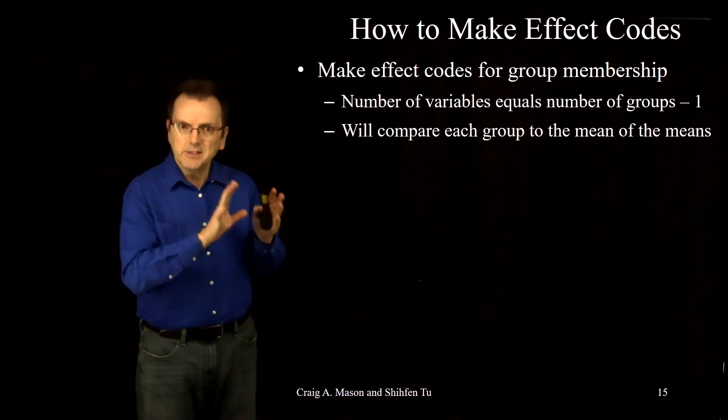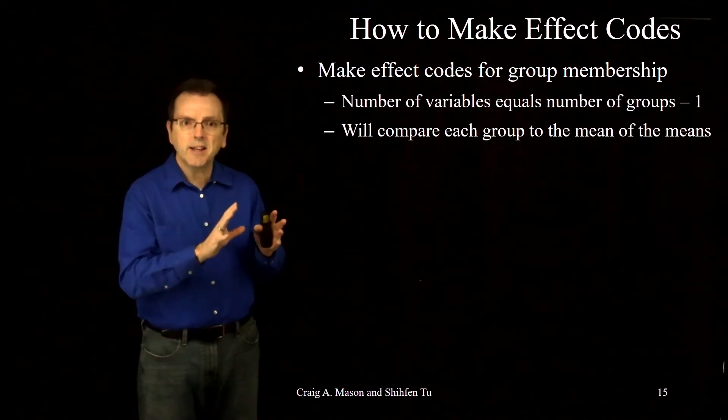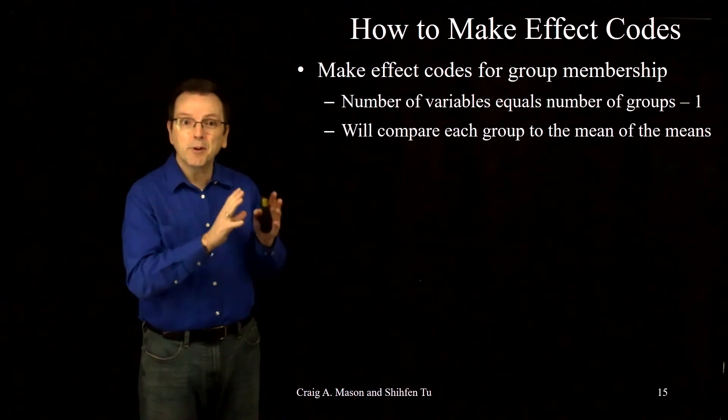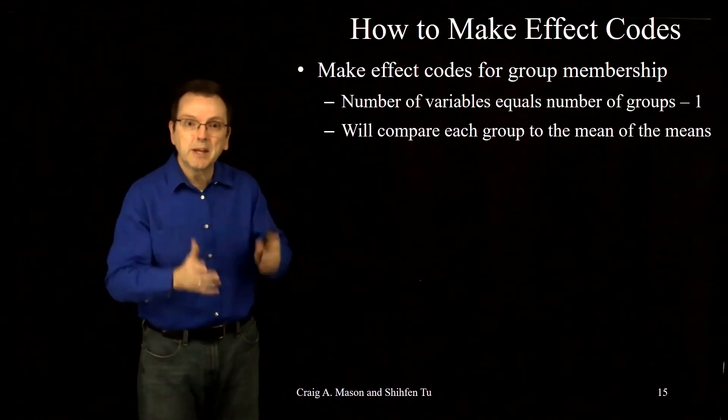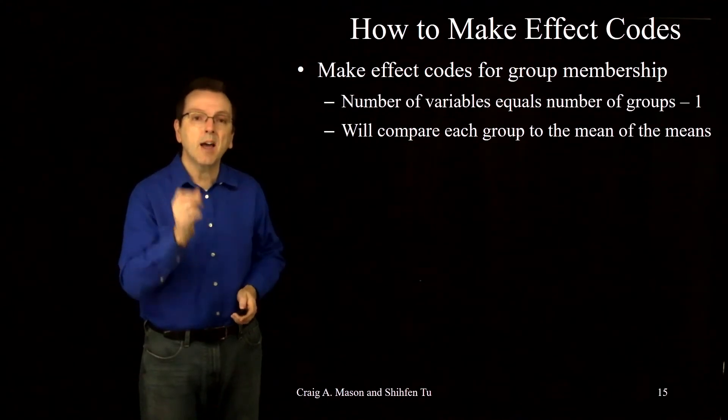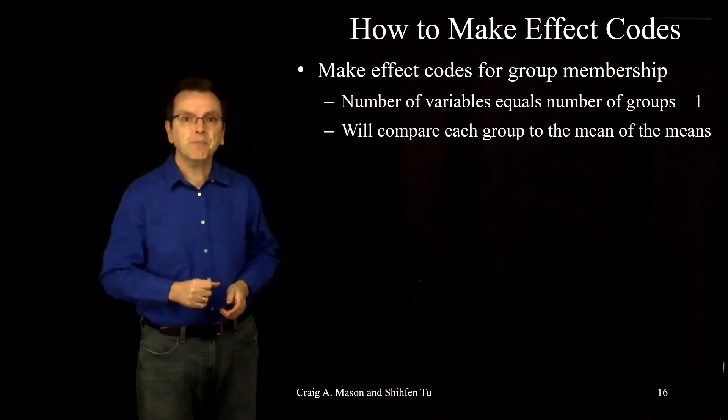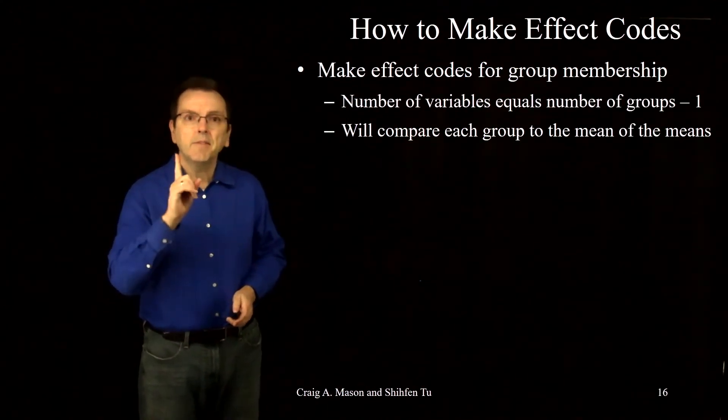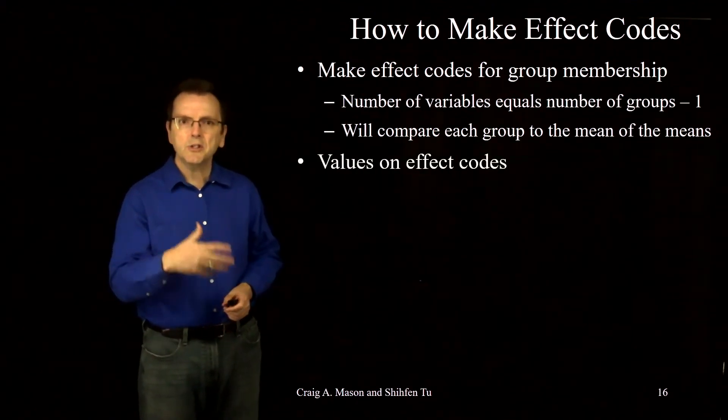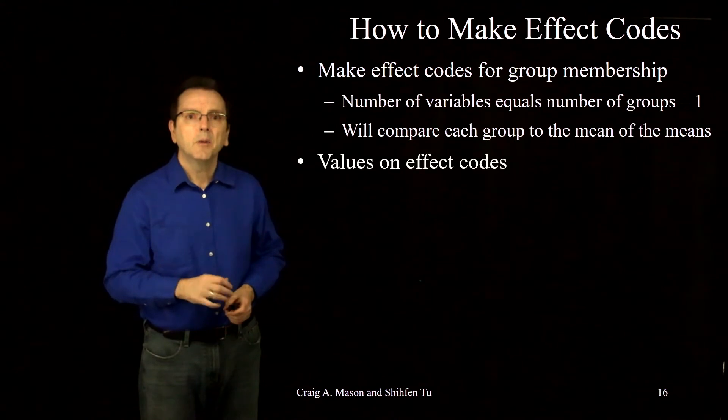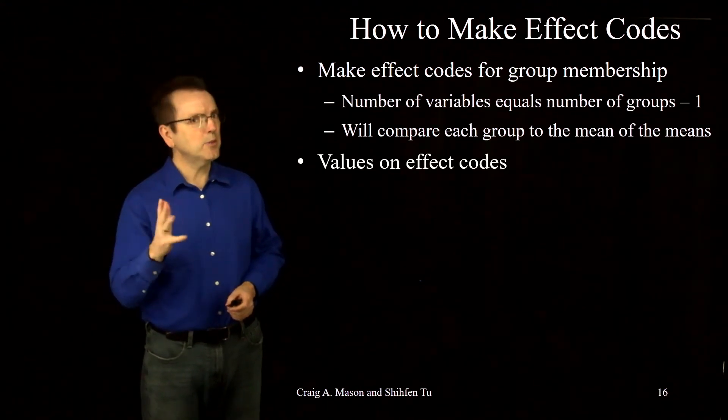But it's important here to recognize that they're not the referent group. There is no referent group. Groups are being compared to the mean of the means. The values for the effect codes are also similar to dummy coding, with a little of a twist this time.